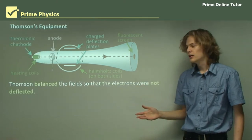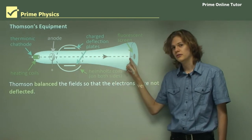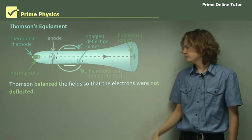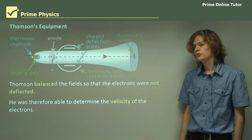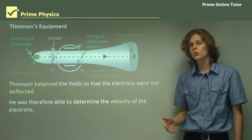With everything set up, Thompson balanced the two fields so that the dot remained undeflected at the end of the tube. He was therefore able to determine the velocity of the electrons using v equals E on b.